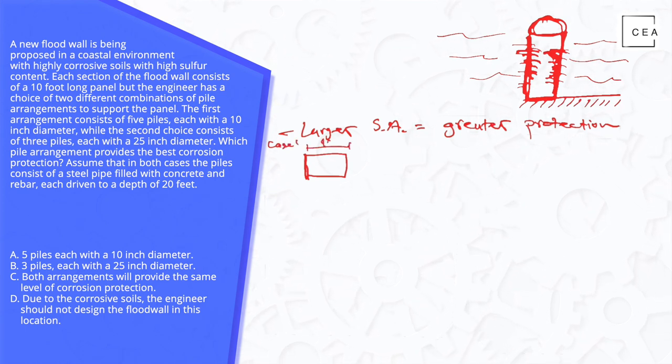We know that's 10 feet and we know it has five columns. Each is driven to a depth of 20 feet. 10-foot wall panel, we said that earlier. And then the diameter. Each is 10 inches.